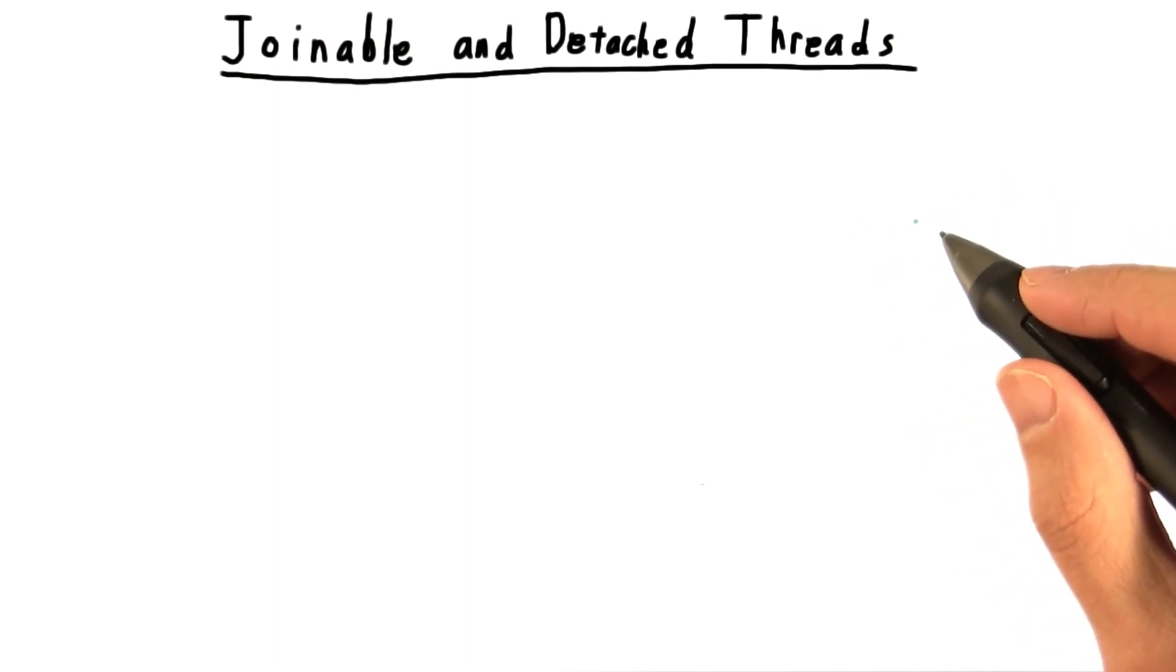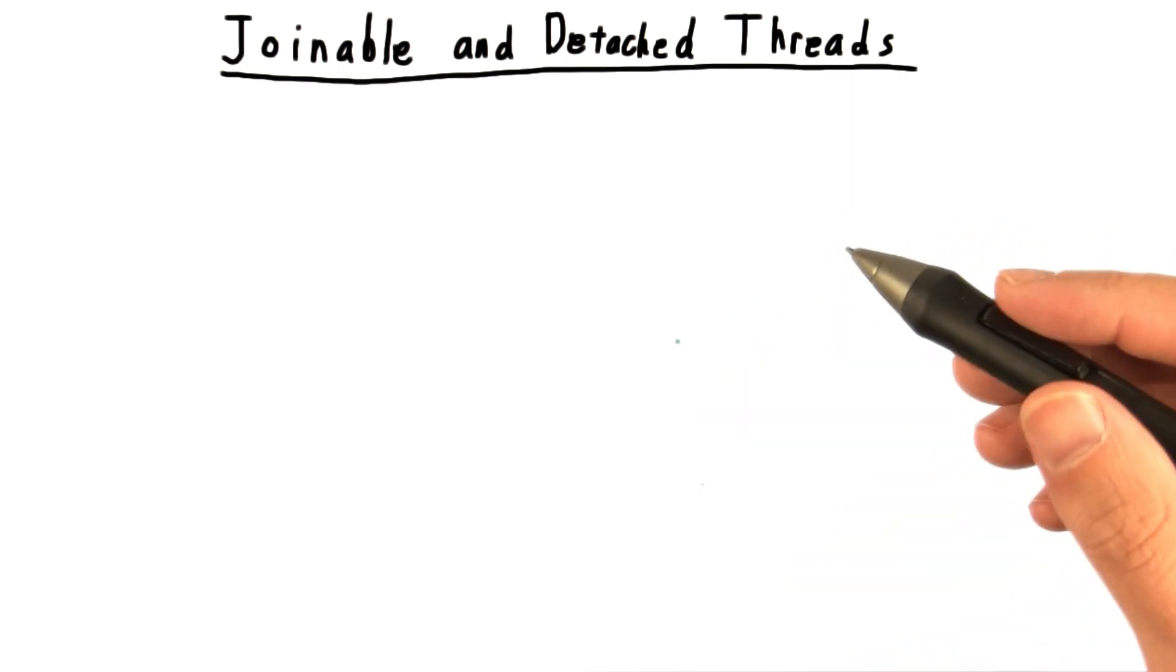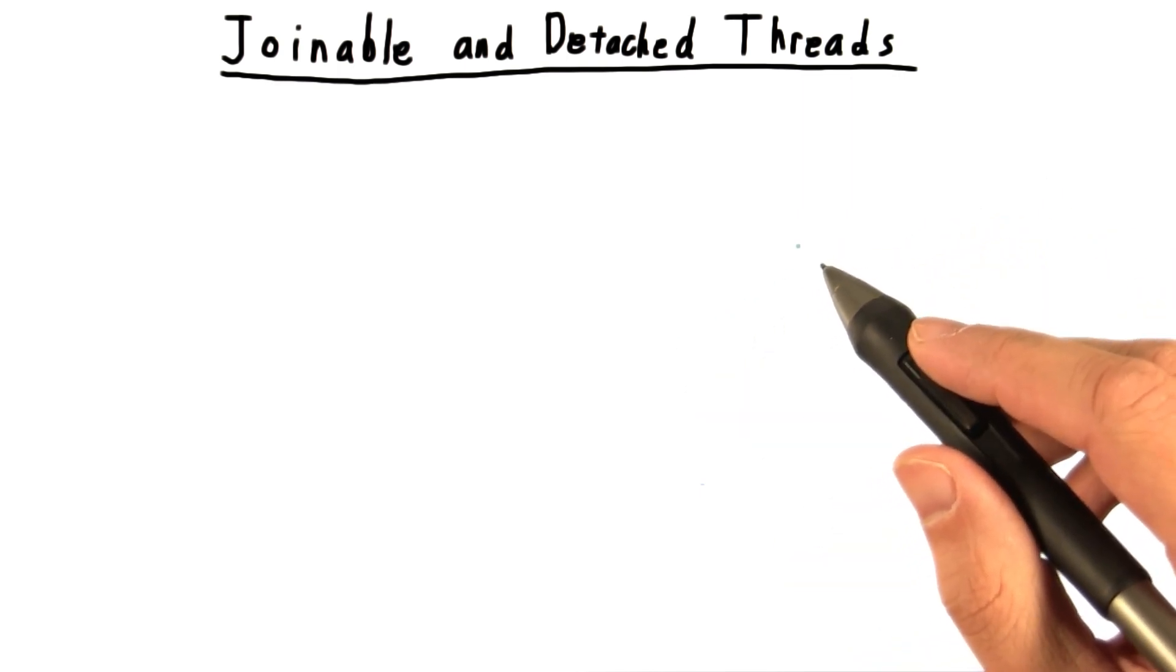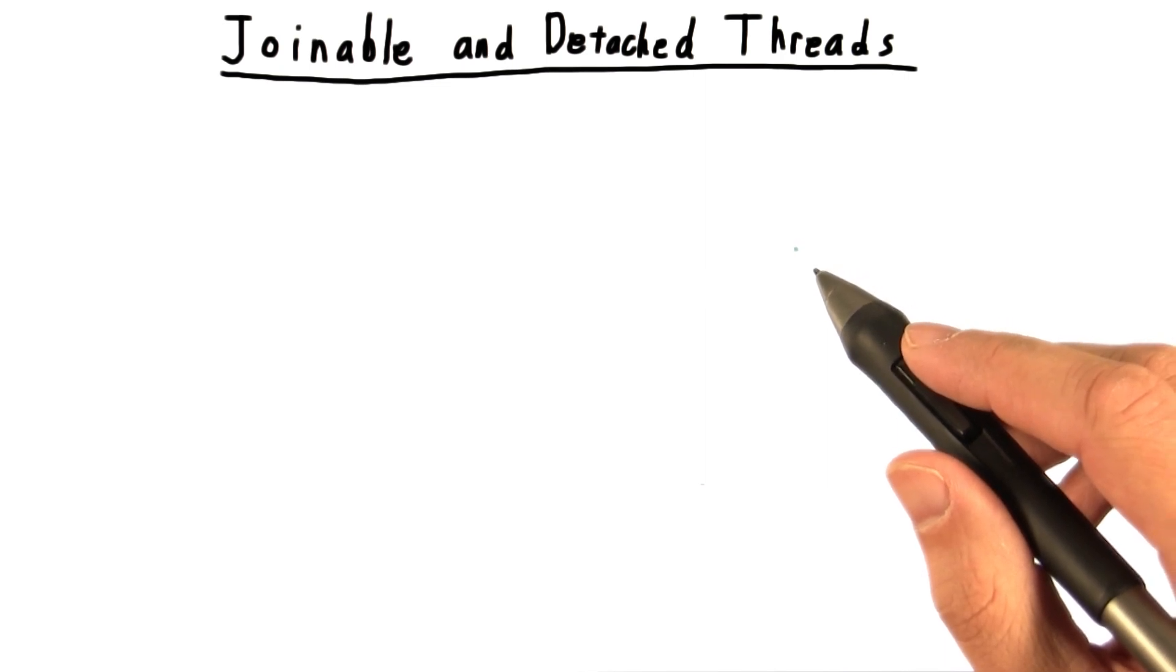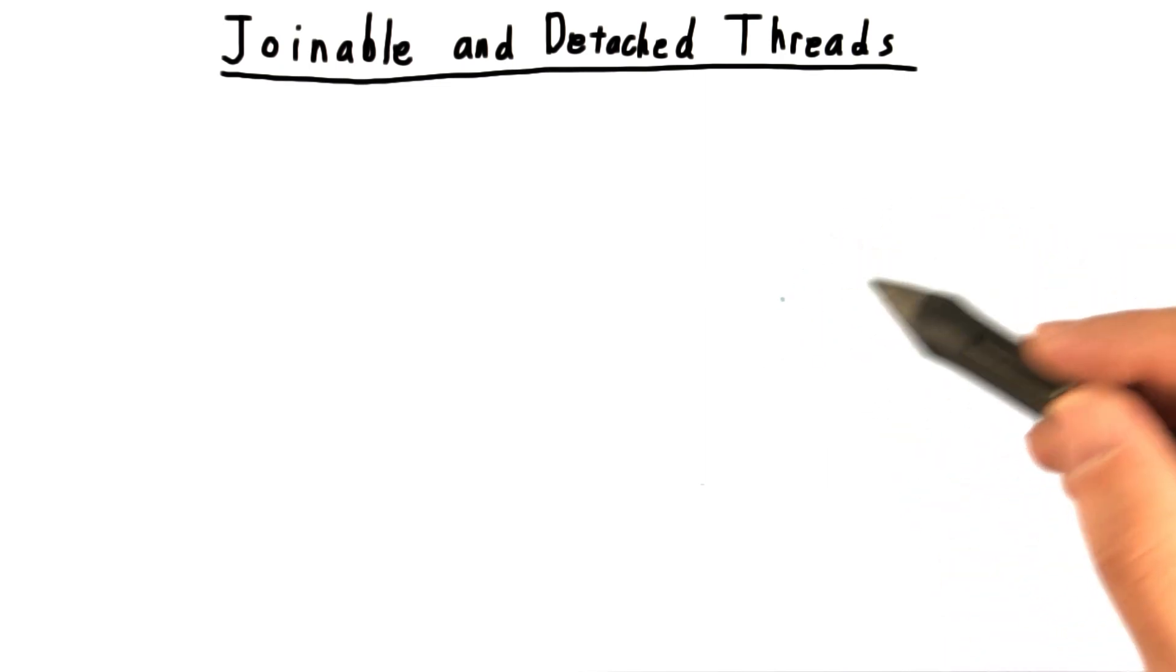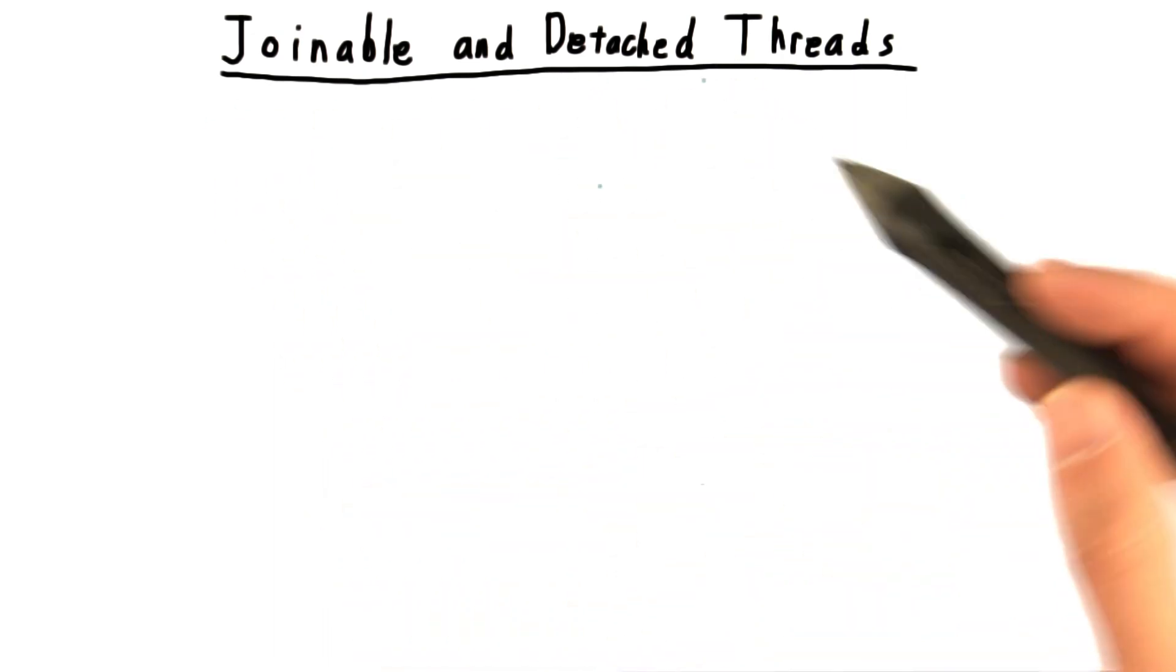Now, if you've been actively thinking about how threads work so far in this lesson, you may be wondering how does the memory for a thread get cleaned up after it is finished? Or where does its return value go? Or how can I make sure the thread has finished its work before I let the main thread terminate? We'll answer all these questions by looking at the distinction between joinable and detached threads.